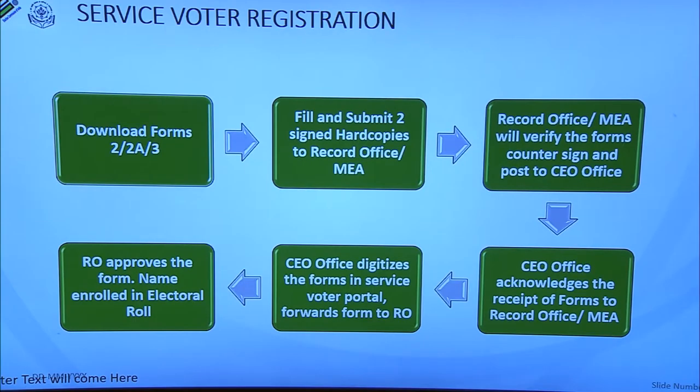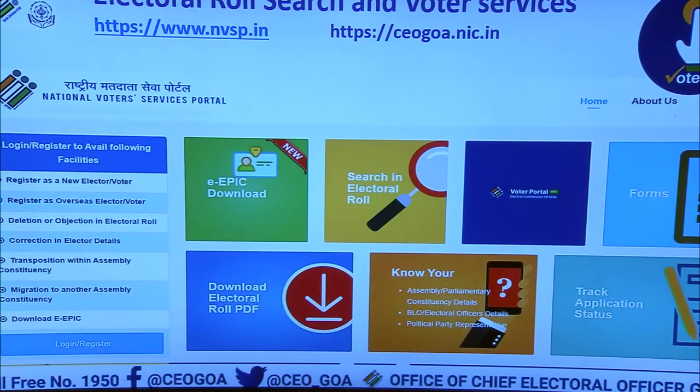Once you fill the form, submit it to the record office or unit office. The record office or unit office will countersign these forms and post them to the office of CEO Goa. The CEO office will digitize these forms and forward them to the electoral returning officers. Once they approve, your name will appear in the electoral roll after publication.